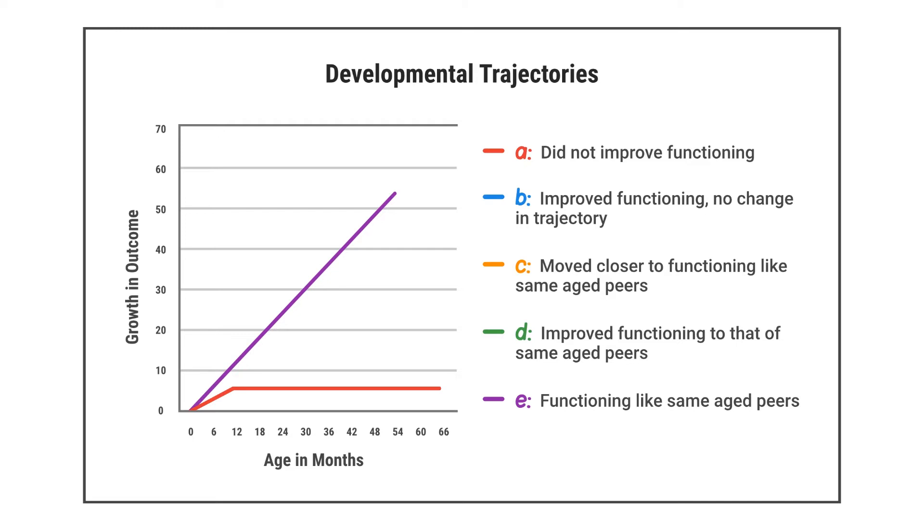The green line shows category D, children who were not functioning like same-age peers in the outcome when they entered the program, but caught up and were functioning like same-age peers by the time they left the program.